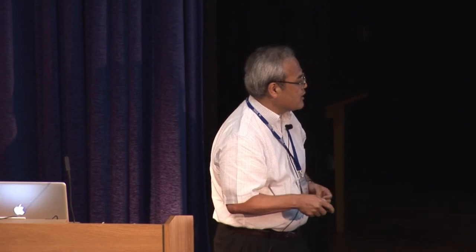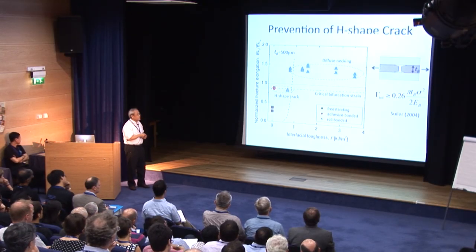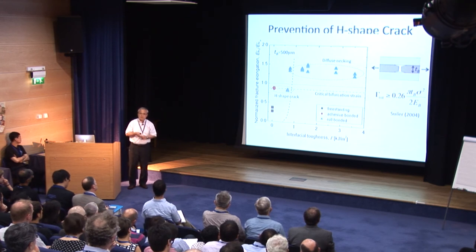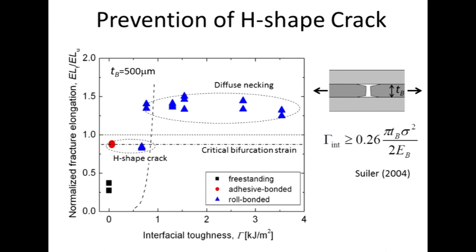We have to suppress those local fractures to obtain larger elongation. In terms of delamination and H-shaped cracks, naturally increasing interfacial toughness increases the elongation of multi-layer steel. When there is delamination, the brittle layer behaves like a single component without plastic constraint and fractures with low elongation. If interfacial toughness is not enough, elongation remains below the uniform elongation predicted by the rule of mixture. With increasing interfacial toughness, the multi-layer steels fracture with diffuse necking in a ductile manner. This boundary can be predicted by an equation also developed in composite research.